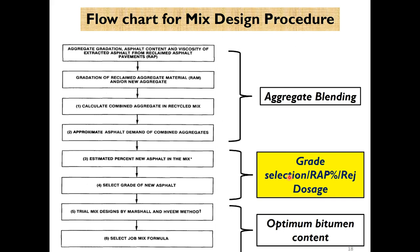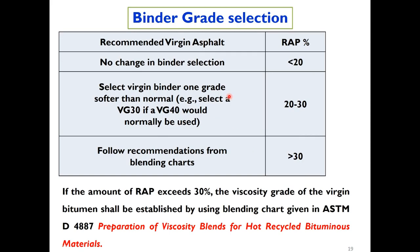The second step is to determine grade selection — the binder grade. The RAP percentage is now defined as 80 percent, and we need to determine whether a rejuvenator is needed and what the dose should be. General guidelines in the ASTM code state: if RAP content is less than 20 percent, there is no change in binder selection — if you are targeting VG40, use VG40. If RAP content is between 20 to 30 percent, select a virgin binder one grade softer — select VG30 if VG40 is normally used. If RAP content exceeds 30 percent, follow recommendations from the blending chart as per ASTM D4887.